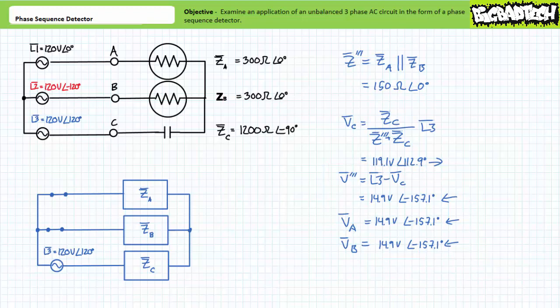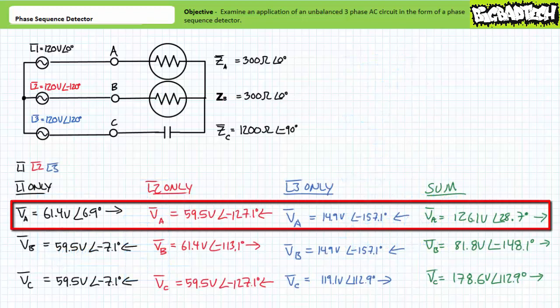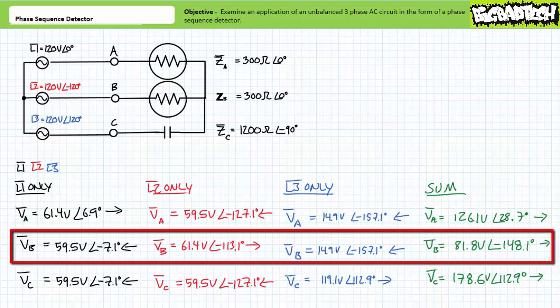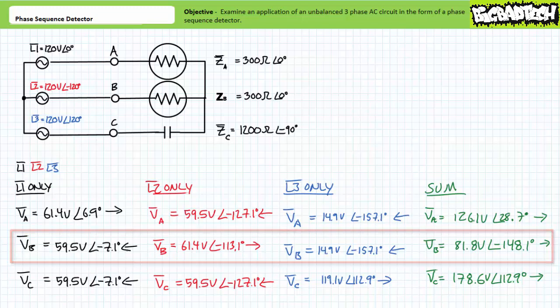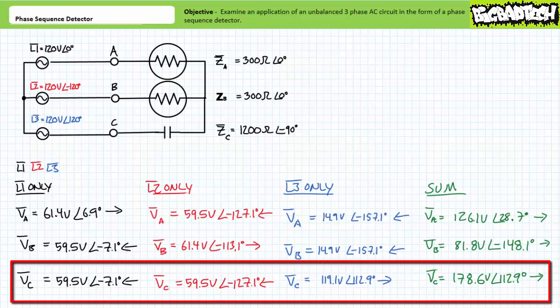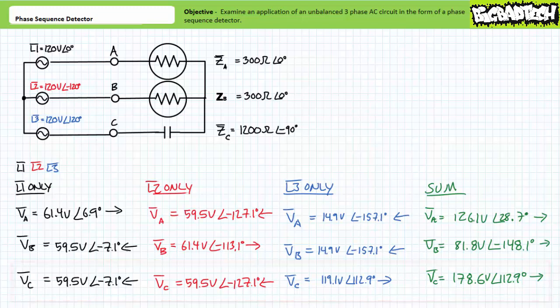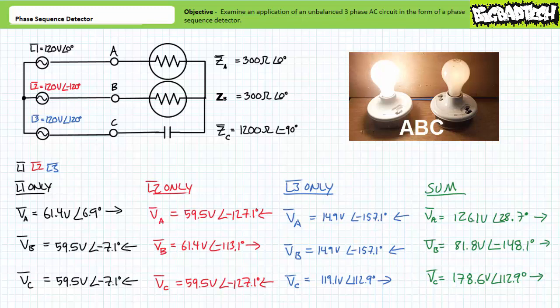Let's now sum the previous results. Accounting for magnitude, phase shift, and polarity, load impedance ZA experiences a voltage drop of 126.1 volts at an angle of 28.7 degrees, with assumed polarity positive to negative left to right. Similarly, load impedance ZB experiences a voltage drop of 81.8 volts at an angle of negative 148.1 degrees, with assumed polarity positive to negative left to right. Load impedance ZC experiences a voltage drop of 178.6 volts at an angle of 112.9 degrees. Given these voltage differentials, it should be obvious that light A would be brighter than light B — a clear indicator that the phase sequence is ABC and not BAC.